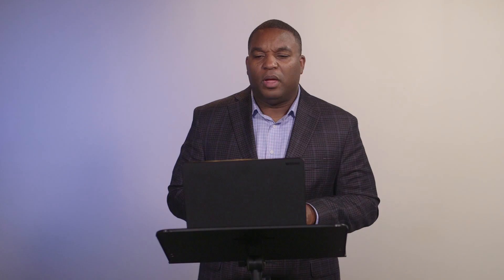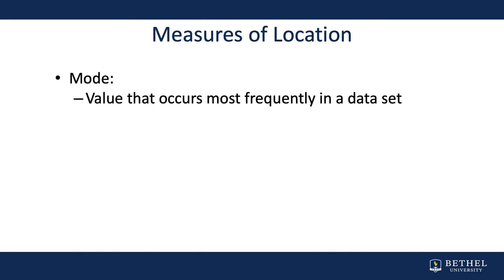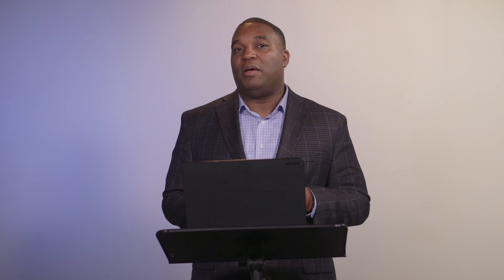Another measure of location is the mode. The mode represents the observation that shows up the most. Using that same data set — 32, 42, 46, 46, and 54 — the mode is the one that appears multiple times. There are two observations with the number 46, so the mode for this data is 46. You can have multiple modes, called bimodal data, which contains two. In this case we only have one, but with a larger sample of data you'd be able to look for more modes in the set.